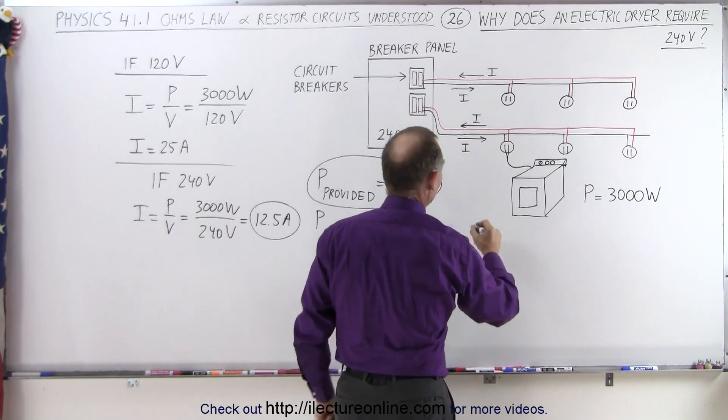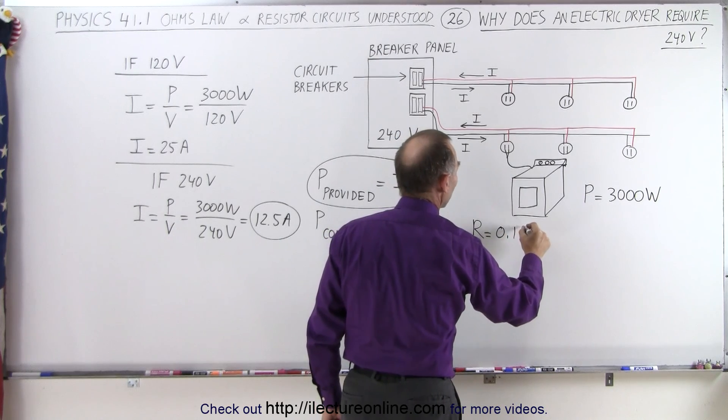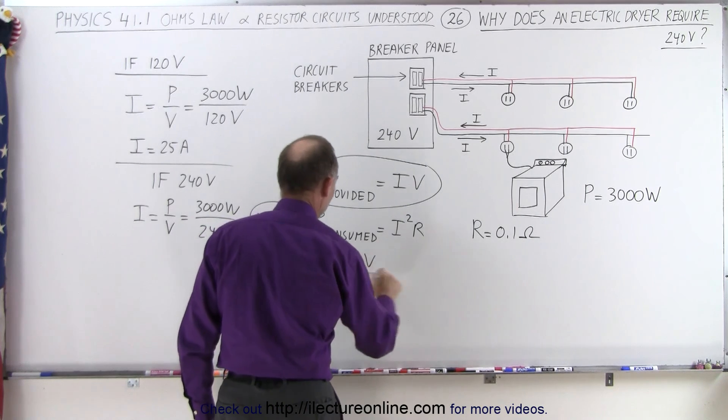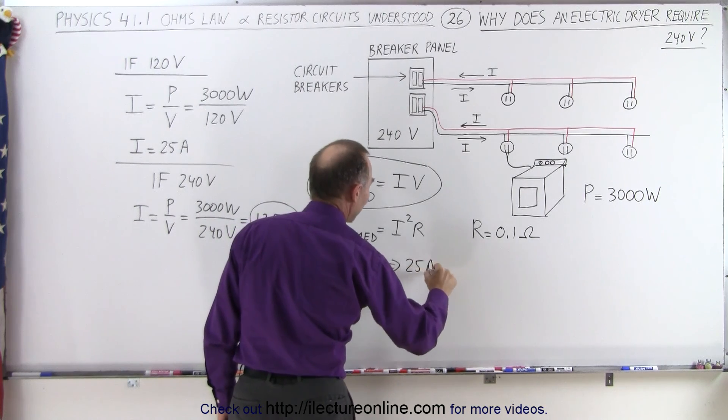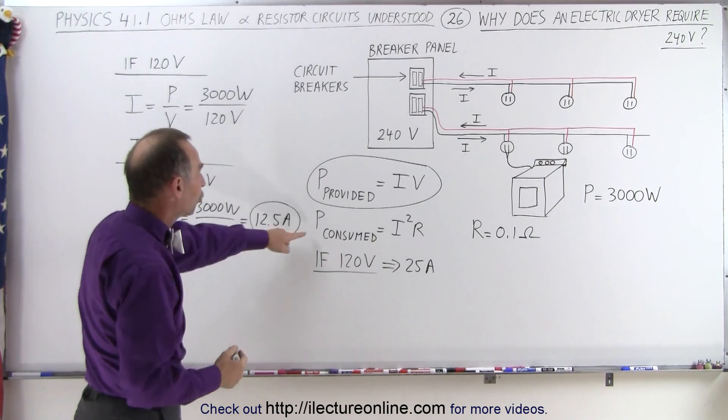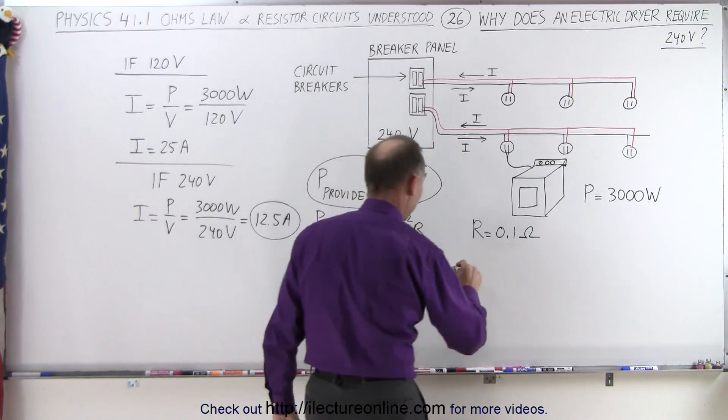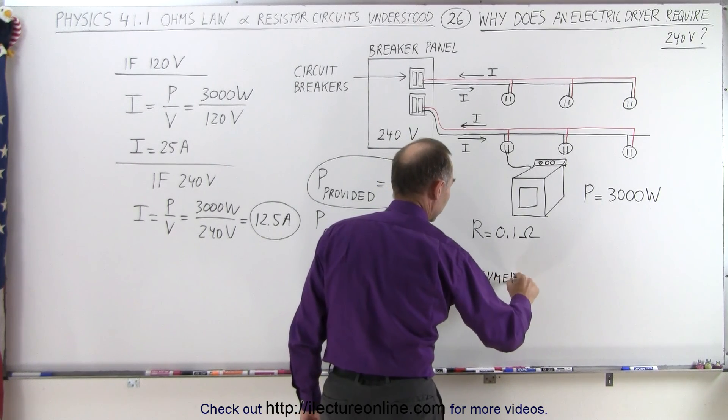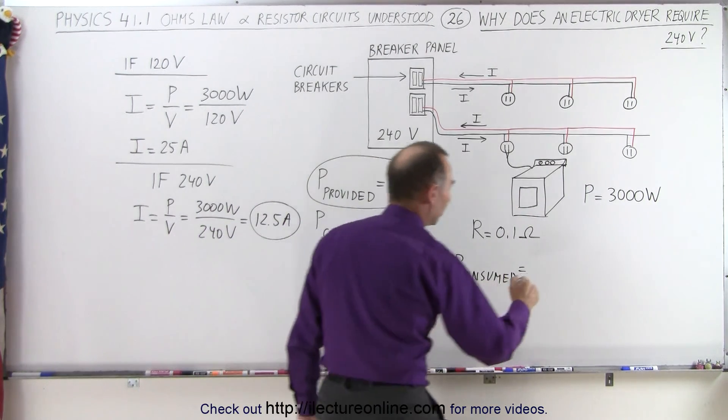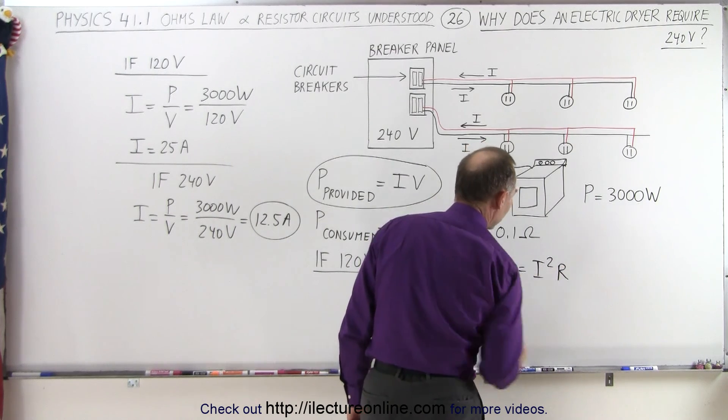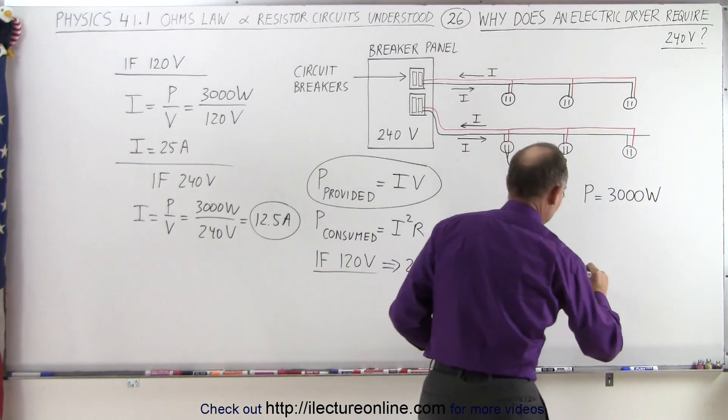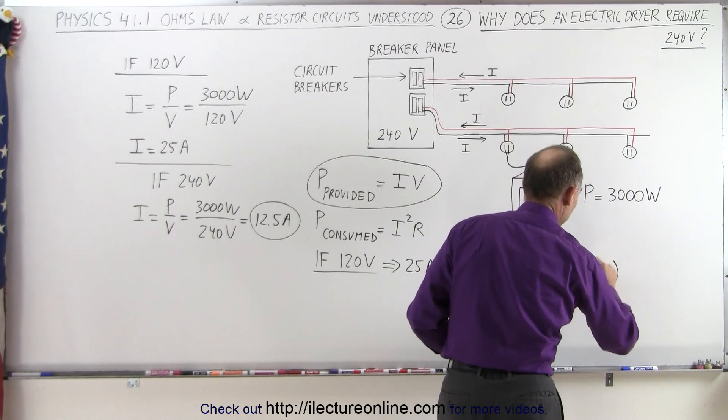Well, let's say that the length of the wire has a resistance equal to 0.1 ohms. Then if we have a 120 volt circuit, and that implies then we have a 25 amp current required to provide enough power to the dryer, then the power consumed by the wires themselves would be quite high. Because the power consumed is going to be equal to I squared times R. So the power consumed is I squared R, and then I would be 25 amps, so that would be equal to 25 amps squared, and then we multiply times the resistance of the wire which is 0.1 ohms.